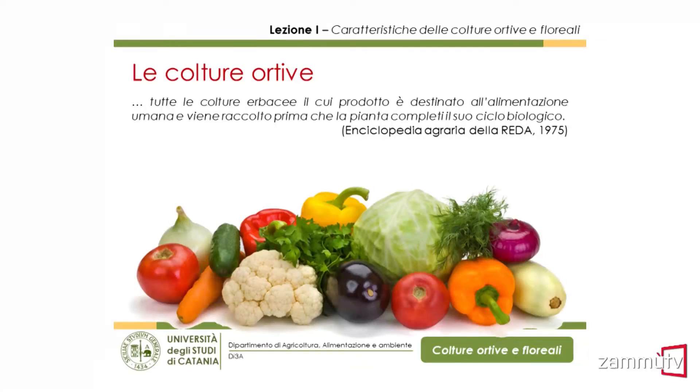Iniziamo a parlare dei due gruppi. Come sempre cerco di trovare il significato alle cose. Le culture ortive, secondo l'Enciclopedia Agraria della Reda — un testo di riferimento, una sorta di dizionario in ambito agrario — sono tutte le culture erbacee il cui prodotto è destinato all'alimentazione, con la particolarità che vengono raccolte prima che la pianta completi il proprio ciclo biologico. Quindi noi raccogliamo degli organi in accrescimento, e questo ha conseguenze sulle caratteristiche di queste piante.